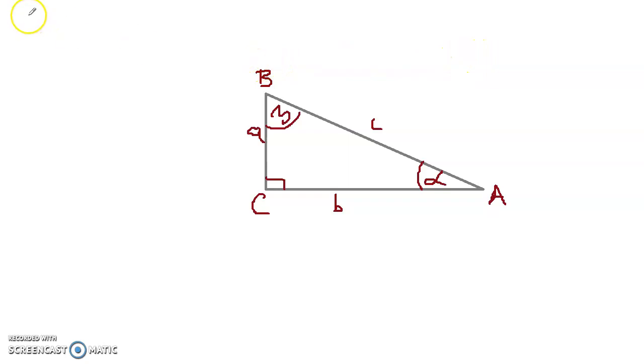Let's introduce sine function. Sine alpha is defined as opposite leg, which is A in our case, over hypotenuse, which is C in our case. I will also write that here, so this is opposite leg.